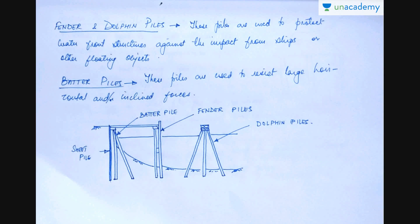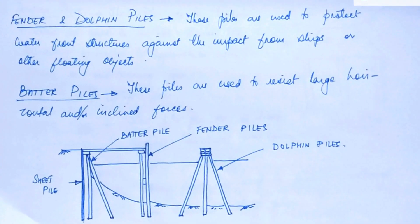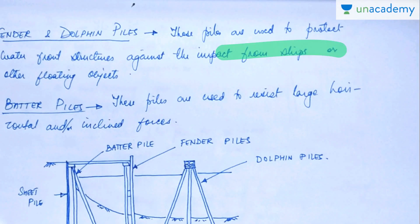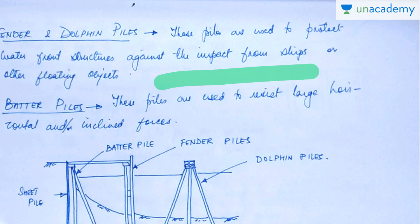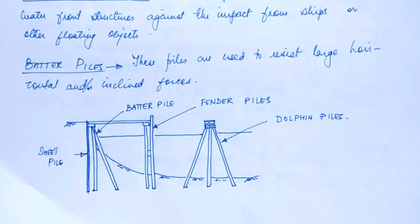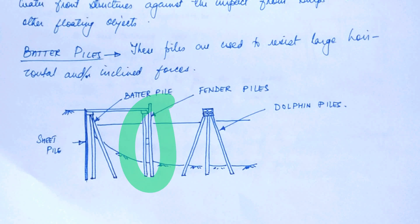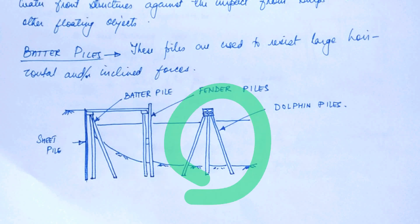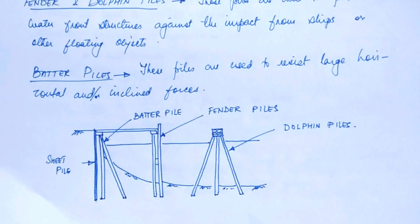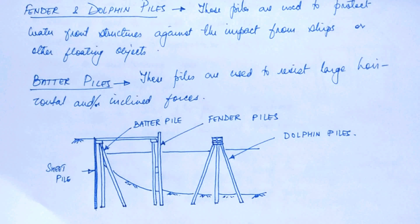There are some more types of piles — these are called fender and dolphin piles. Fender and dolphin piles are used to protect waterfront structures against the impact from ships or other floating objects. You can see here — this one is your fender pile and this is your dolphin pile. These are provided to protect the structure against impact from ships or other floating objects.